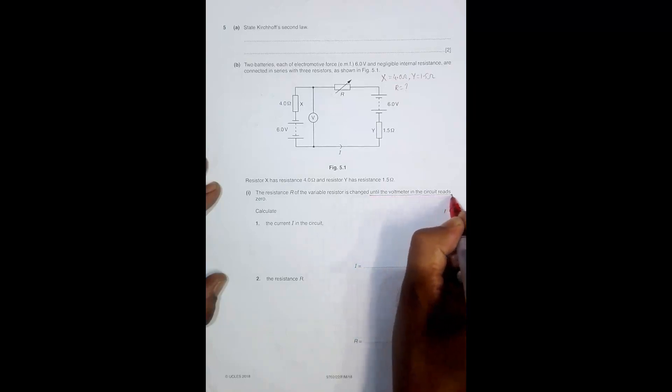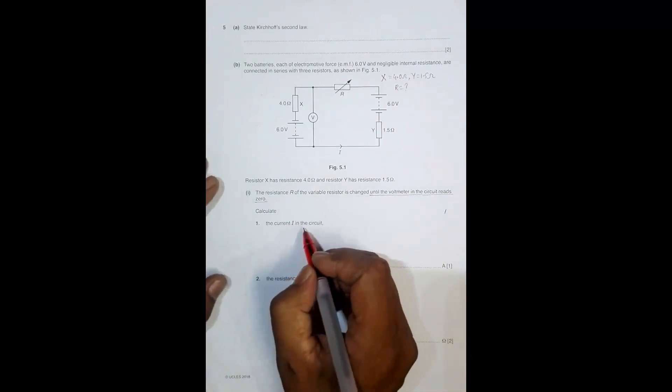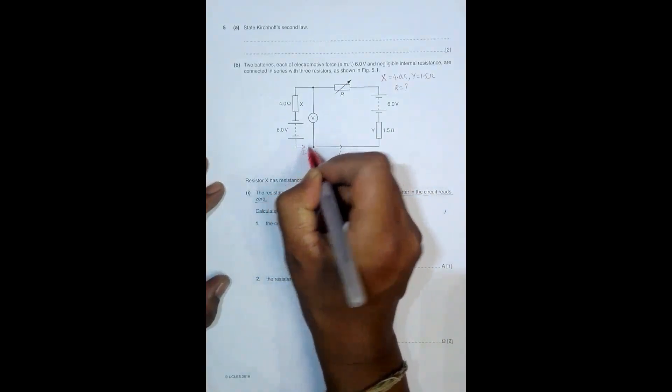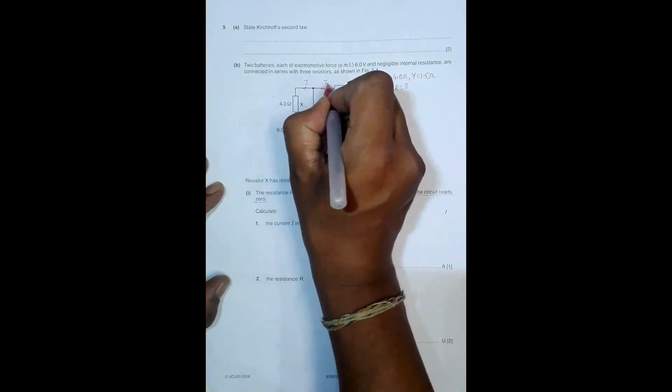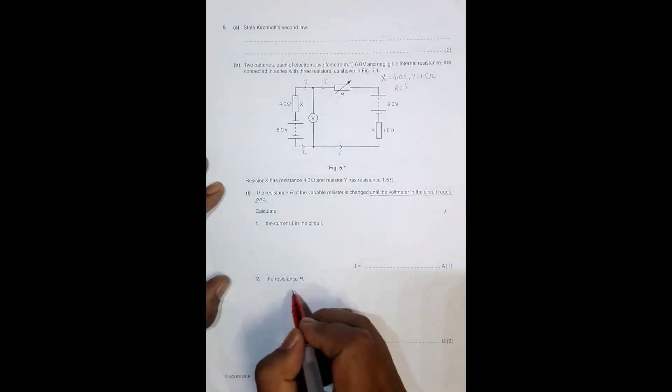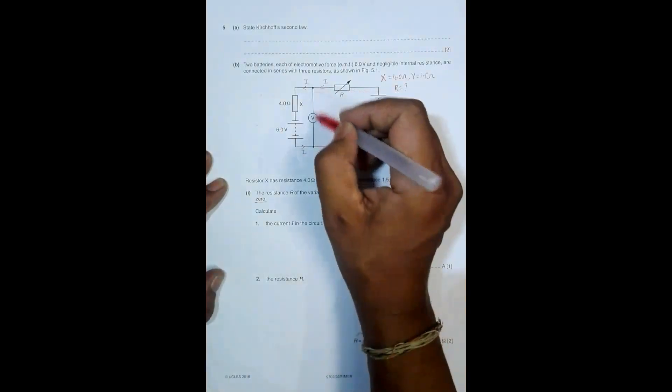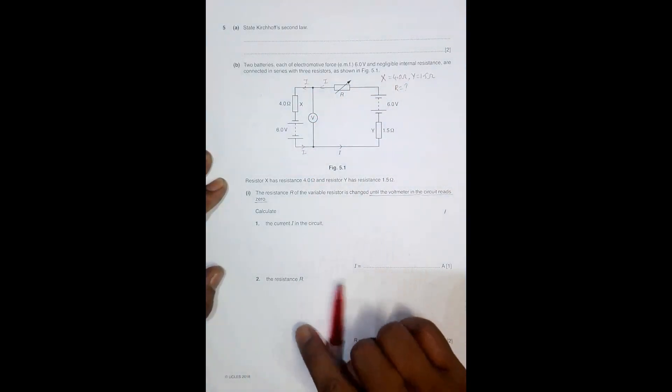In that case, we have to calculate the current I in the circuit. The current is I everywhere - here, here, and here, everywhere it's I. Then I want to find the resistance. Since the reading is zero, we can consider that this circuit is somewhat simplified.